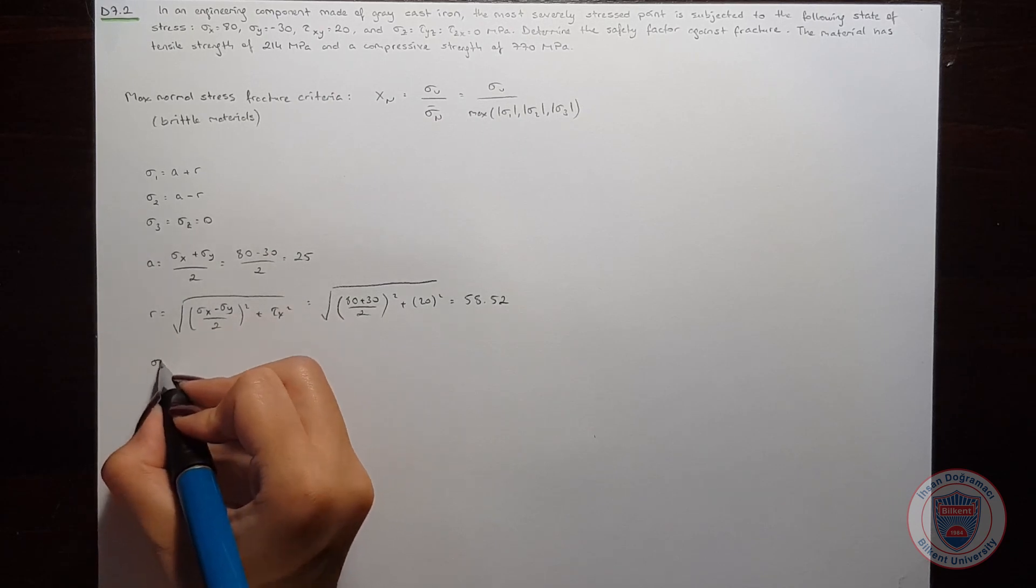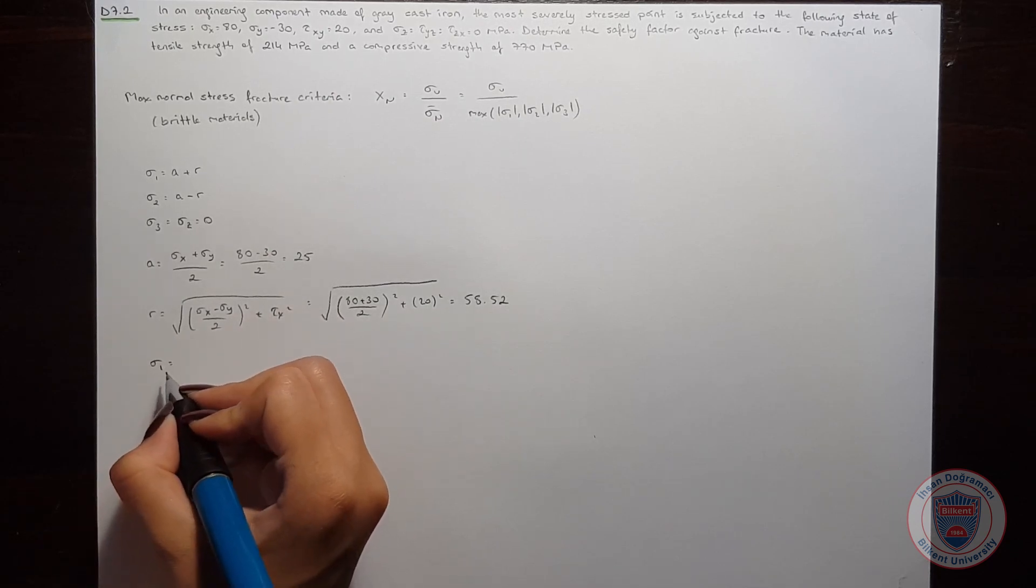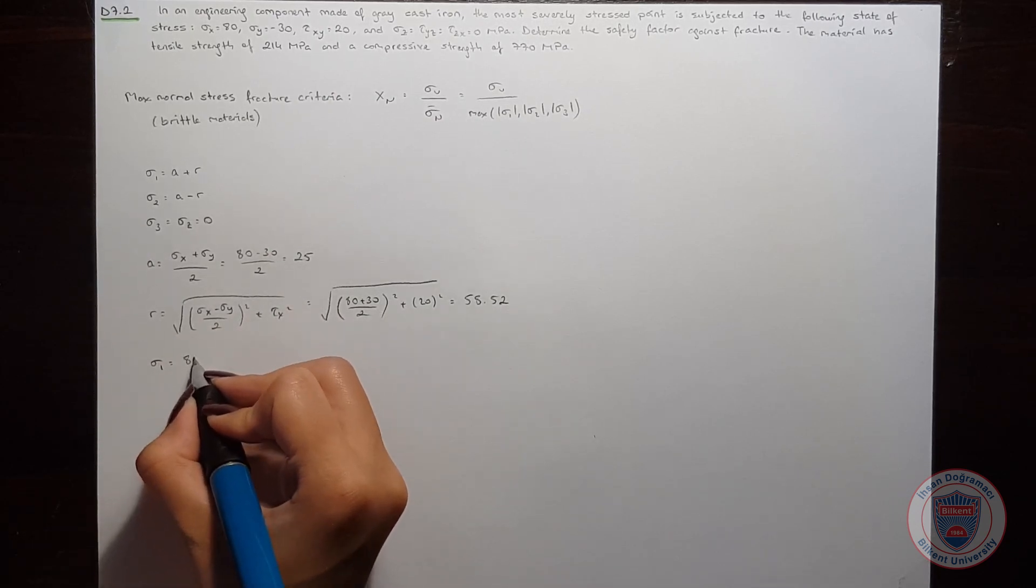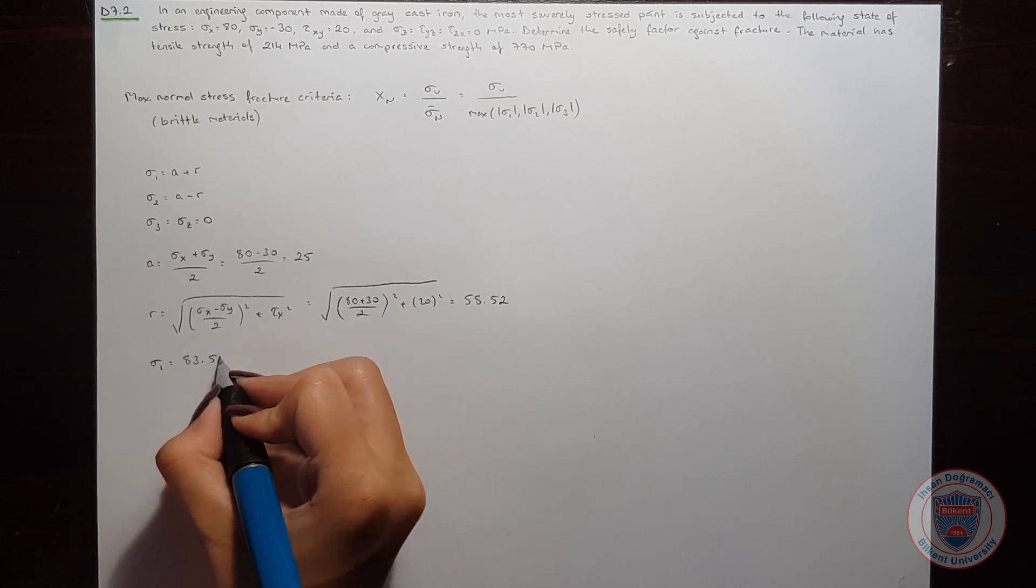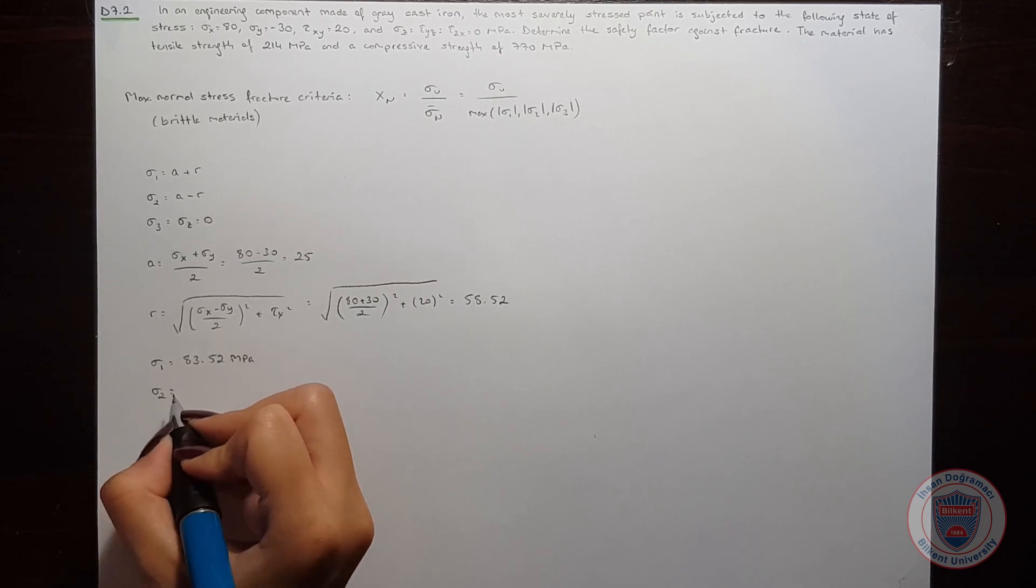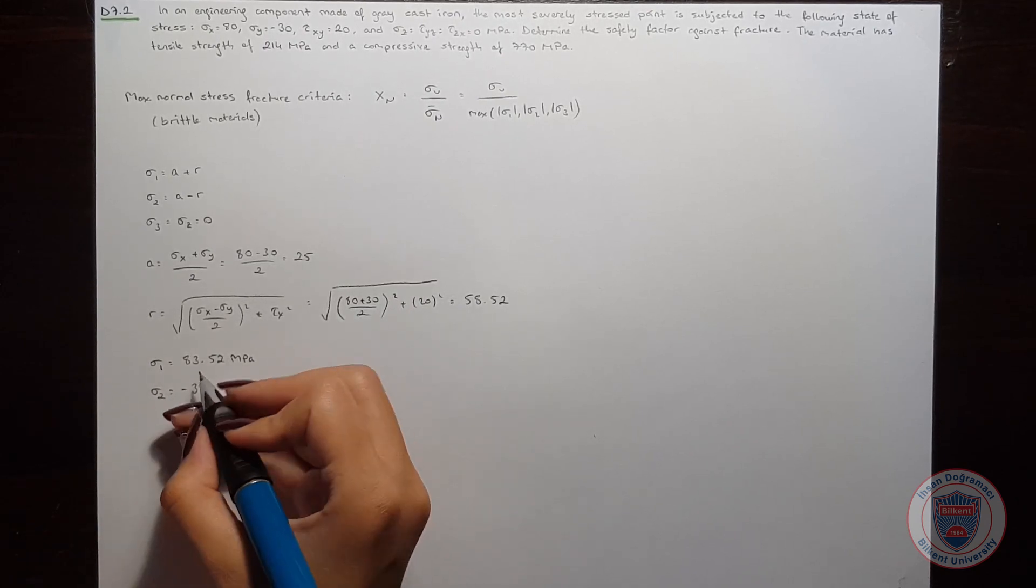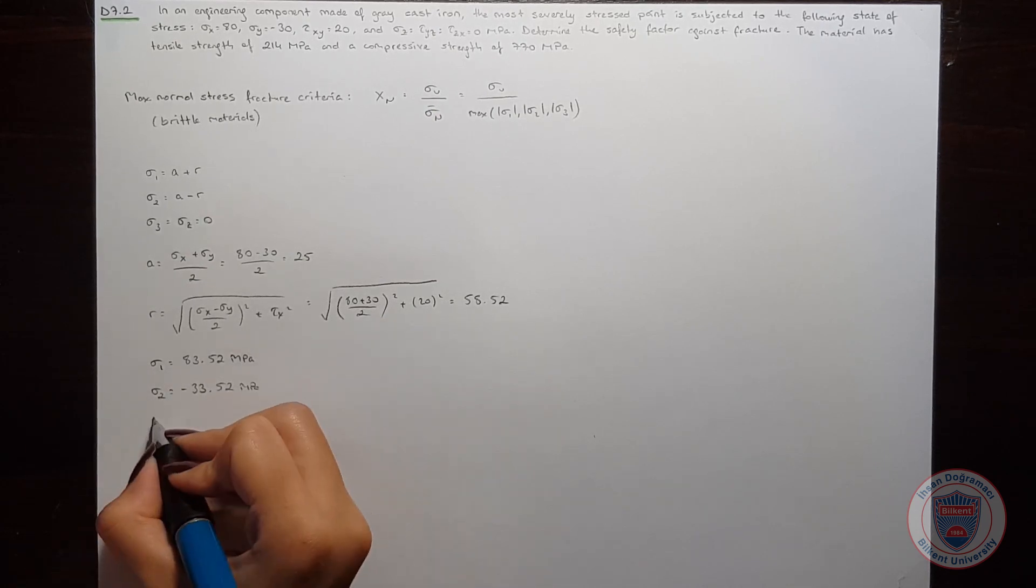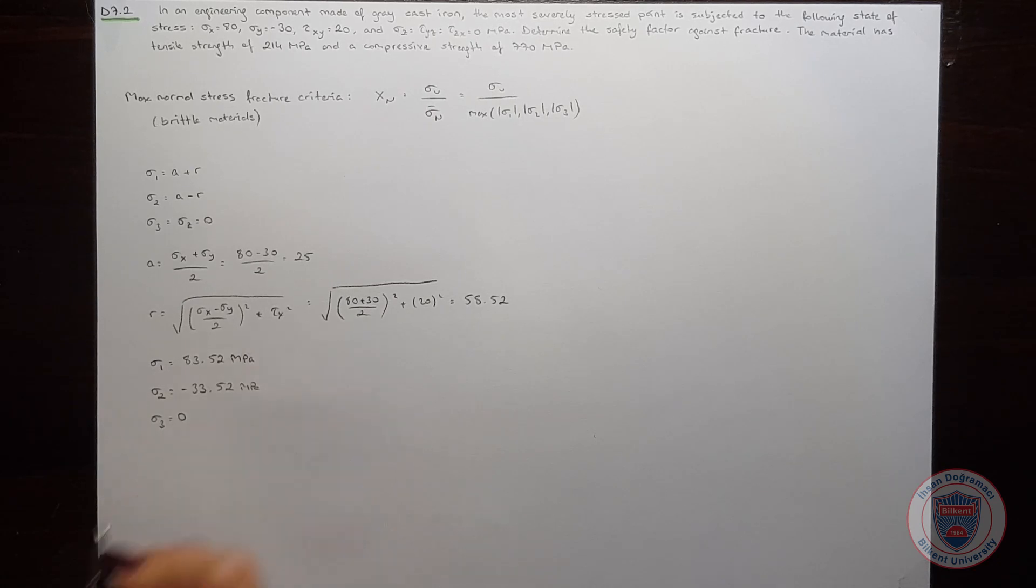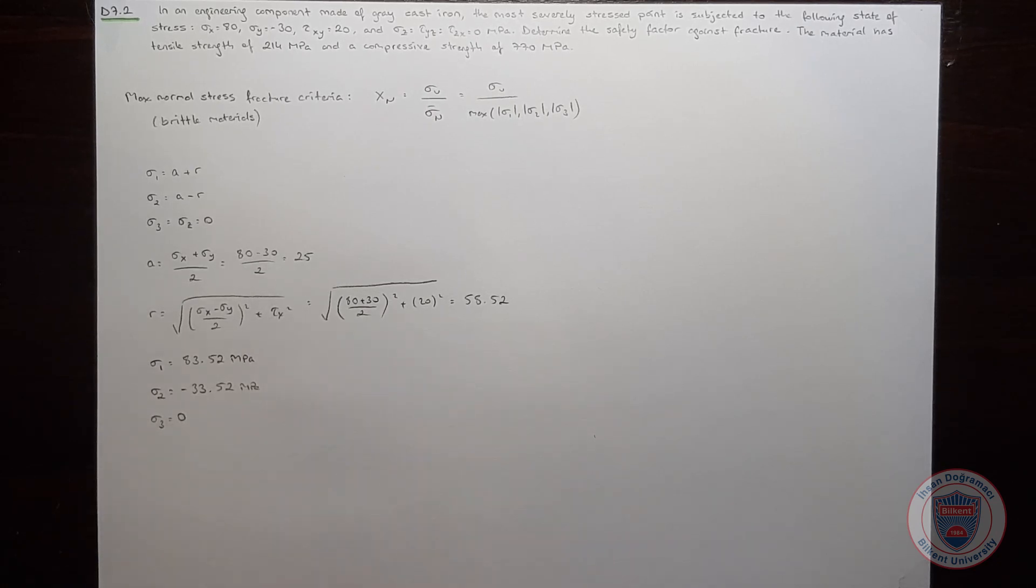So sigma 1 is equal to 83.52 MPa, and sigma 2 is equal to minus 33.52 MPa. And we already know sigma 3 is equal to 0. As you can see, sigma 1 is the largest value here, so we will use sigma 1 as sigma n.